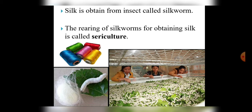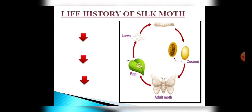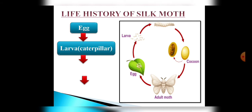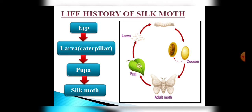Now let's see how this insect produces silk. For this we will study the life cycle of the silk moth. Basically this process starts with the eggs of the silk moth, which are then converted into larva or caterpillar. Then this larva is converted into pupa, and in the final stage the caterpillar becomes a silk moth. This entire process takes 6 to 8 weeks.